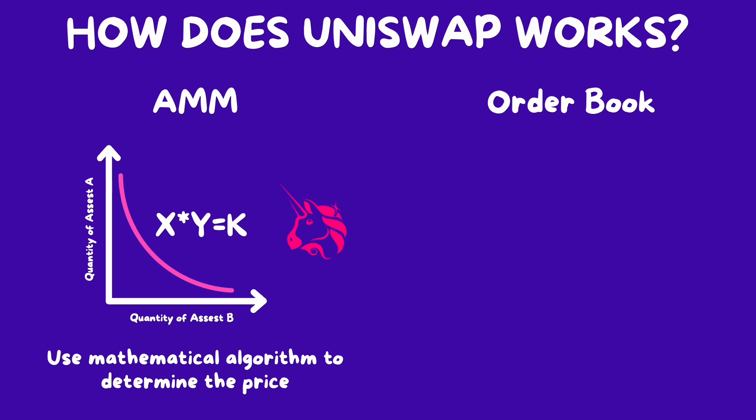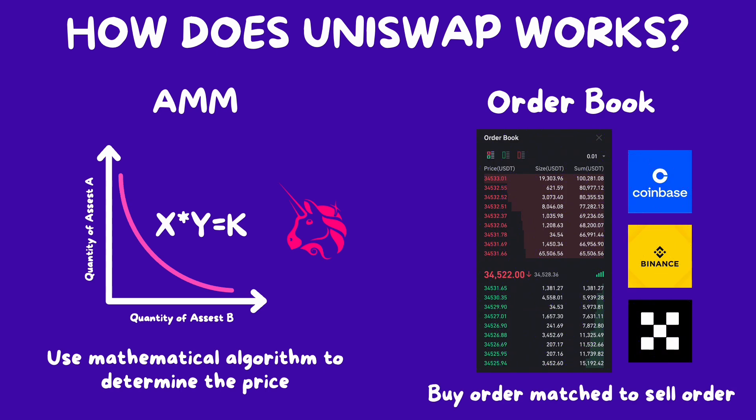However, in CEX with the order book system, buyers and sellers place limit and market orders on a centralized platform. The order book displays these orders, and a transaction occurs when a buyer's limit order matches a seller's limit order. These methods rely on a central platform such as Coinbase, Binance, and OKX to match trades.